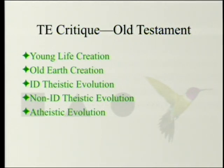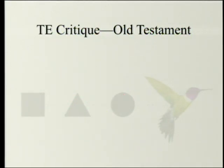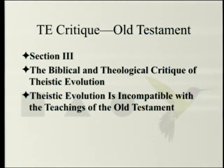This book is primarily aimed not at atheistic evolution but at non-intelligent design friendly theistic evolution. The current chapter is by John Currid, who's an Old Testament scholar, and it's in section three of the biblical and theological critique of theistic evolution. We've already been through the scientific and philosophical critique. This particular chapter is entitled 'Theistic Evolution is Incompatible with the Teachings of the Old Testament.'